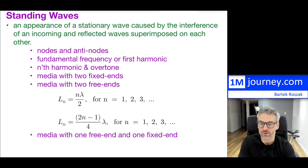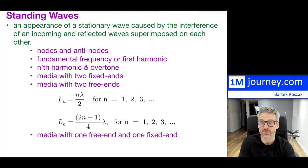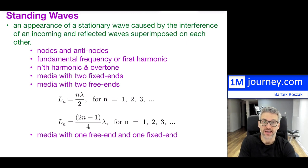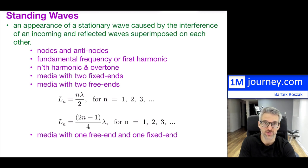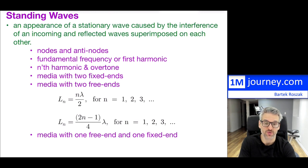We're going to talk about a few things: the difference between a node and an anti-node in standing waves, the fundamental frequency, the first harmonic or nth harmonic, and how it relates back to overtones — which is more on the music side. We'll also cover what happens with standing waves from the viewpoint of having two fixed ends or two free ends, measuring the actual length of a rope or string and the wavelengths of waves carried through, and finally media with one free end and one fixed end.